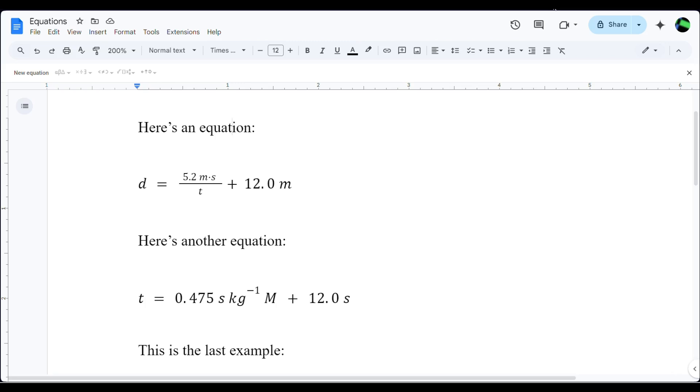But when you use the equation editor in Google Docs, everything is automatically italicized. All the letters are in italics and you can't undo it, not easily anyway.